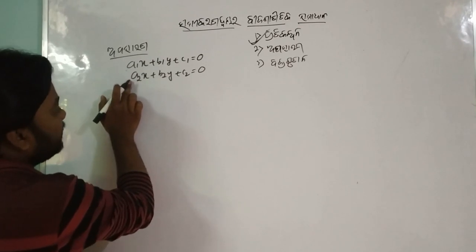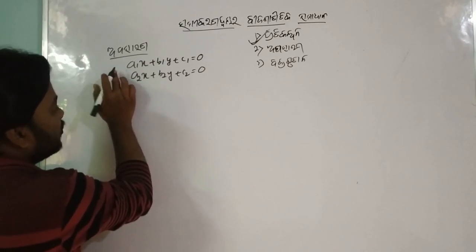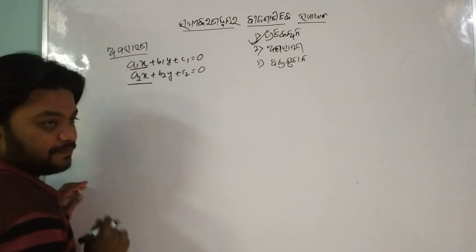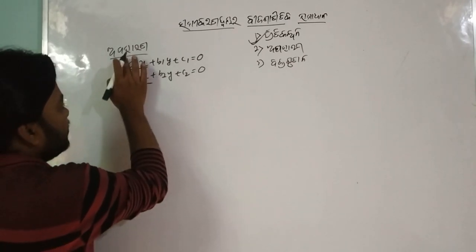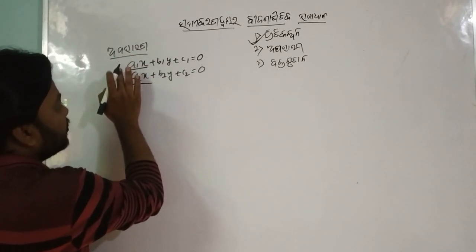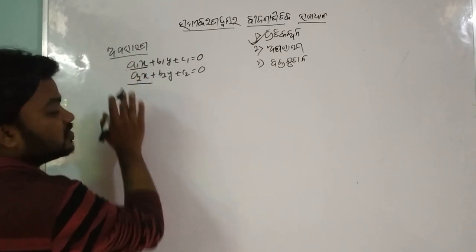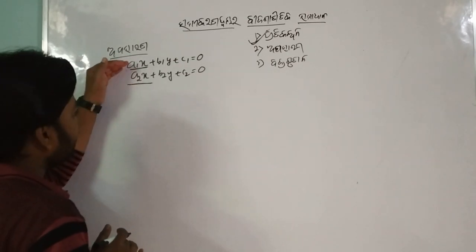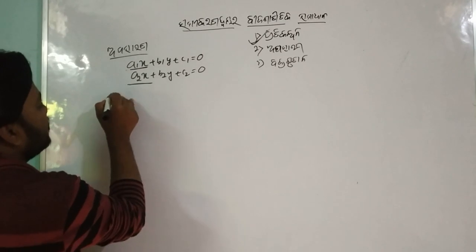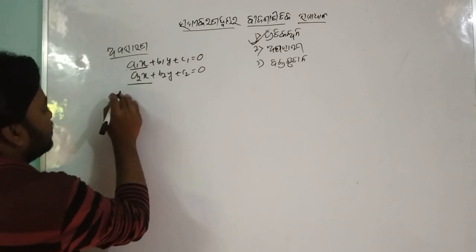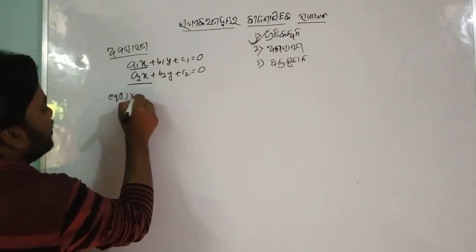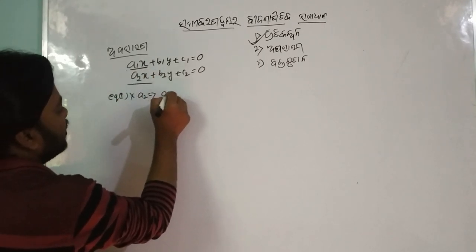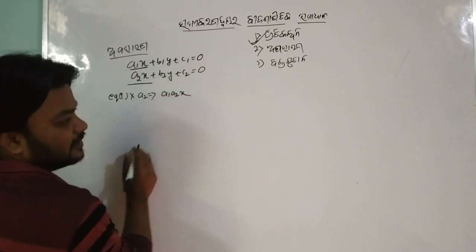A theta in the direction of x will be equal to x. This is a1x and a2x. If you have a theta in the direction of x it will be equal to x. This is a1x, this is a2x.